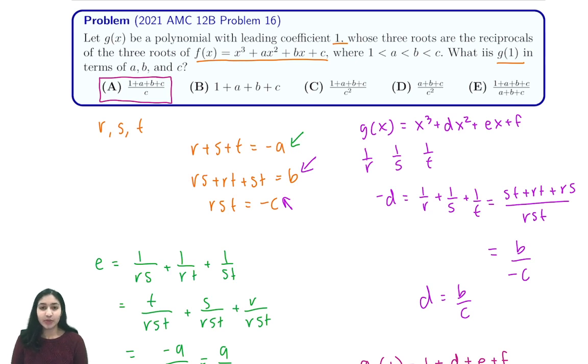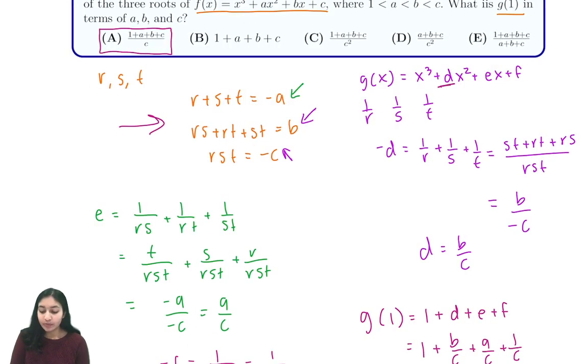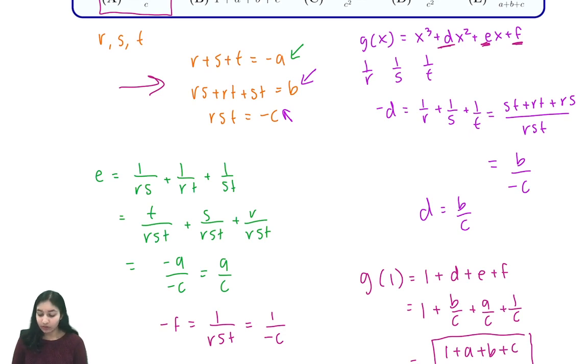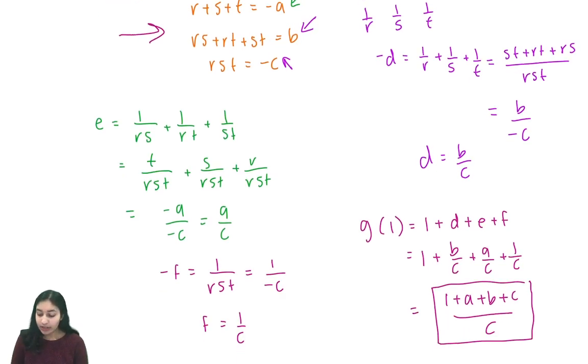To summarize what we did in this problem, we used Vieta's to find these three expressions from f(x), and then we tried to find, again by Vieta's, what our different coefficients would be in terms of our roots. We solved for them based on our expressions from f(x), plugged our values into g(1), and saw our answer is 1 + (a + b + c)/c. Thanks for watching. If you liked the video, please make sure to like and subscribe.